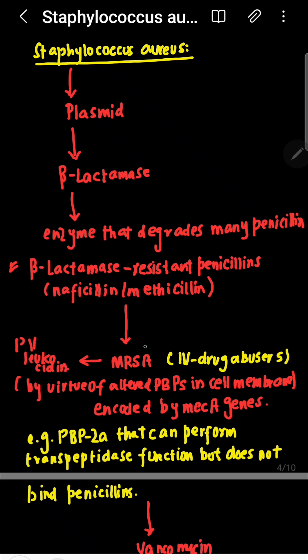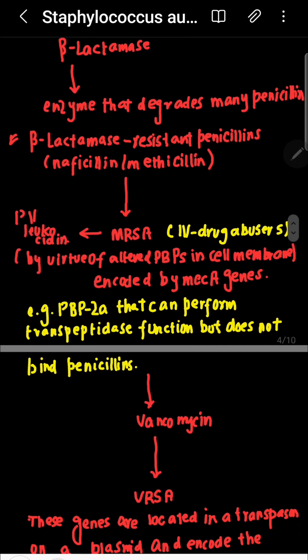MRSA — methicillin-resistant Staphylococcus aureus — is prominent in IV drug abusers and is the most common cause of infection in IV drug users. In MRSA, there are altered penicillin-binding proteins in the cell membrane encoded by mecA genes, for example penicillin-binding protein 2A, which can perform transpeptidase function but cannot bind penicillins.